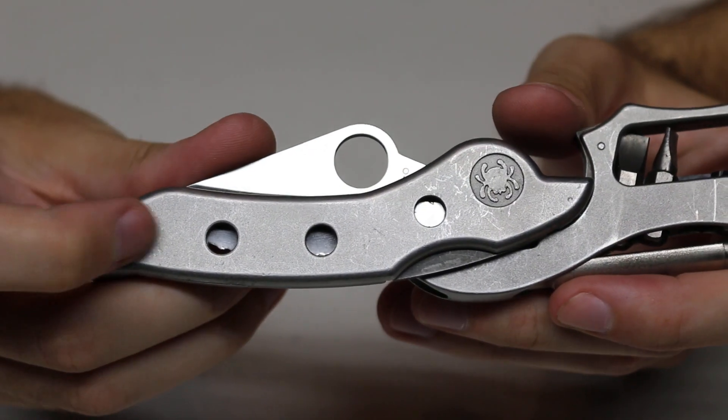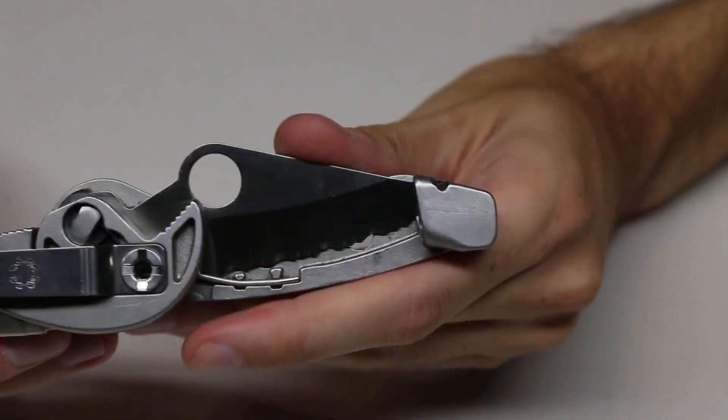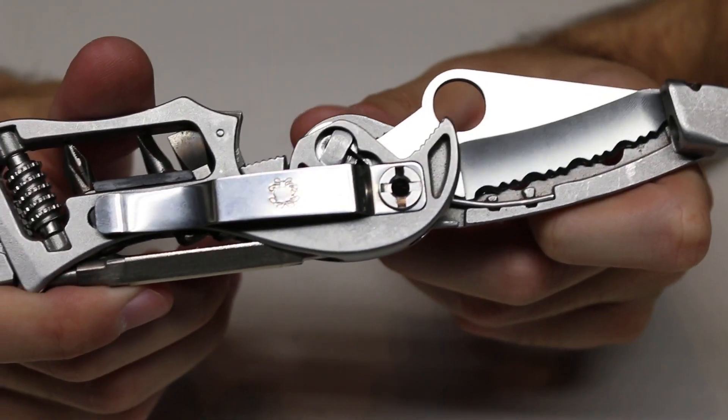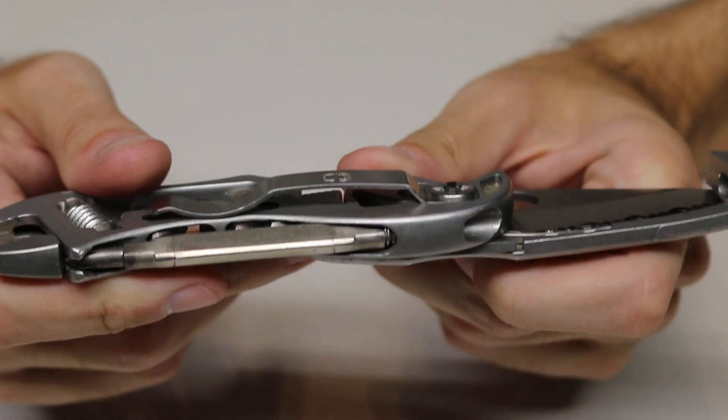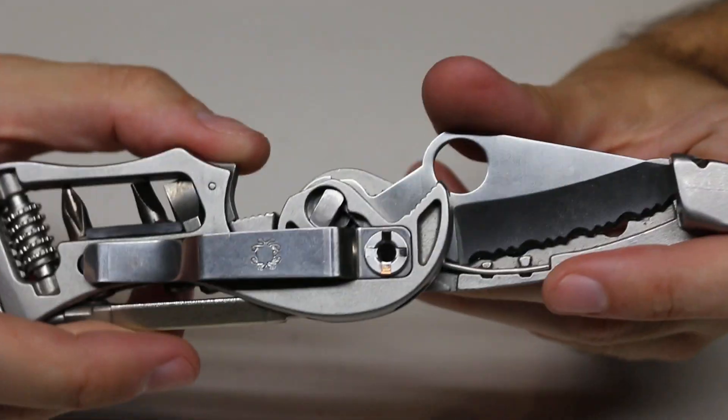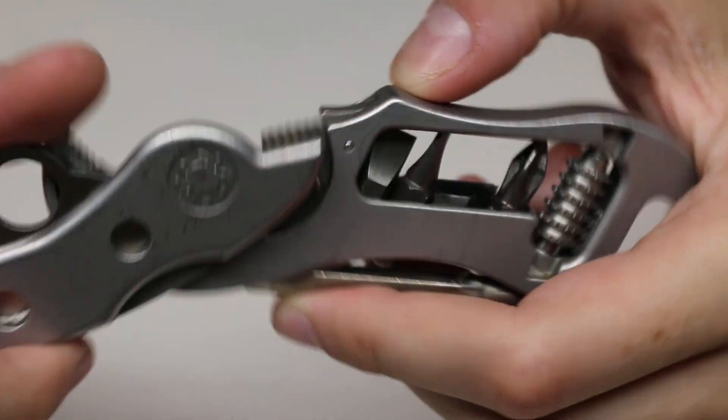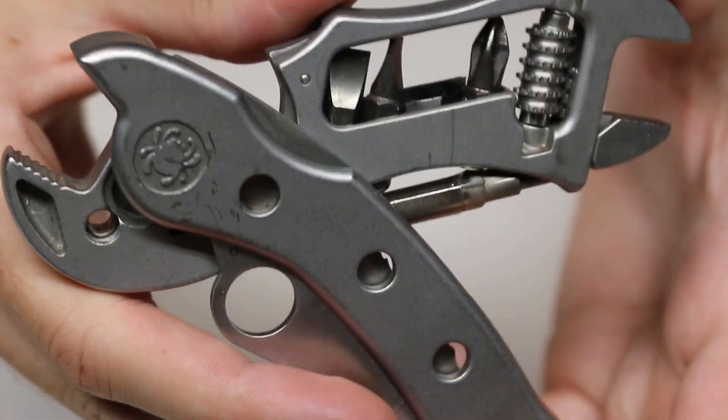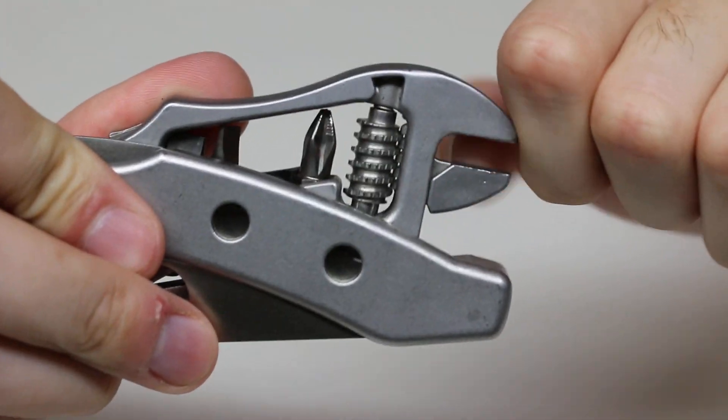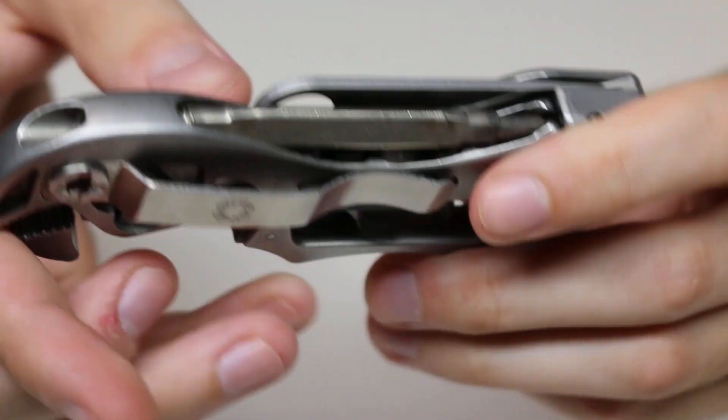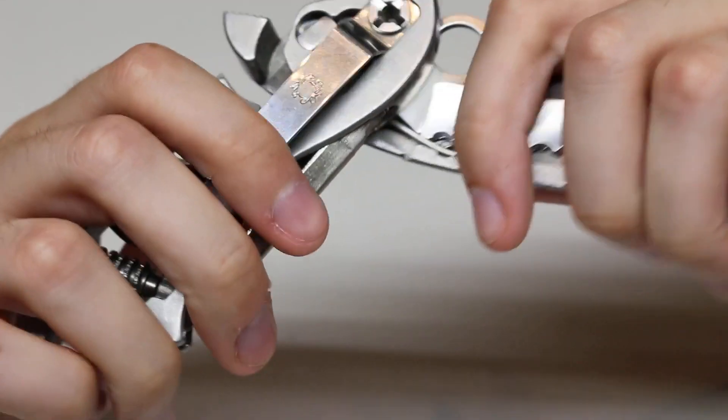I believe there are some versions that will actually say USA on here. But this is not one of them. Well of course it isn't. It doesn't say it so it would not be. Let's just show that. Actually it will be on this side a little bit better, easier to see. You have to have that closed in order to close this. And let's separate the tool into two separate pieces.